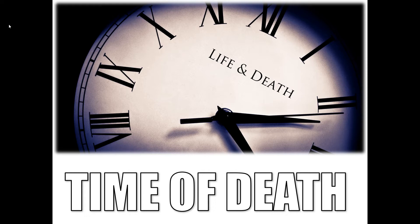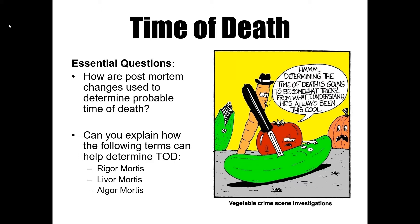Time of death is sometimes abbreviated TOD. Today we're going to look at different post-mortem changes that take place and talk about how investigators use those changes to determine a probable time of death or time since death. We're specifically going to look at three new terms: rigor mortis, livor mortis, and algor mortis, though there are other methods of determining time of death as well.